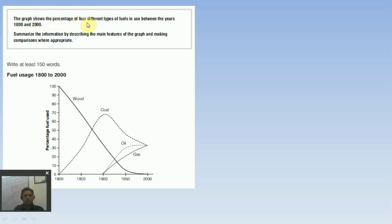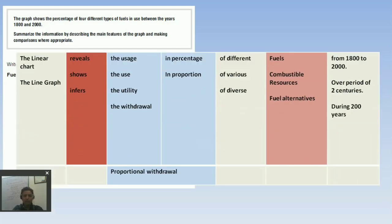Before moving, let us also go through what this statement is saying. The graph shows the percentage of four different types of fuels in use between years 1800 to 2000. Hardly there isn't anything left. One thing is quite understood that we will explain this particular task in past indefinite.